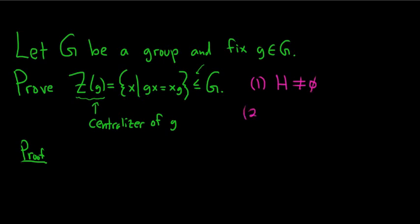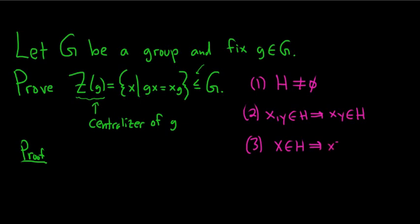The second condition is to show that given two elements x and y in H, the product xy is also in H. This is saying it's closed under the group operation. And third, given any element x in H, the inverse element should also reside in H. This is saying that the group is closed under inverses.